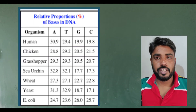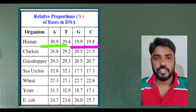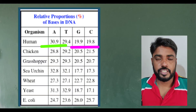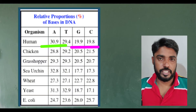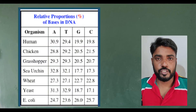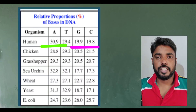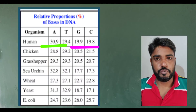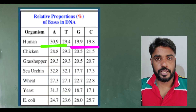For example, in this table you can see that in human DNA the percent of adenine is approximately equal to the percent of thymine, and the percent of guanine is approximately equal to the percent of cytosine.